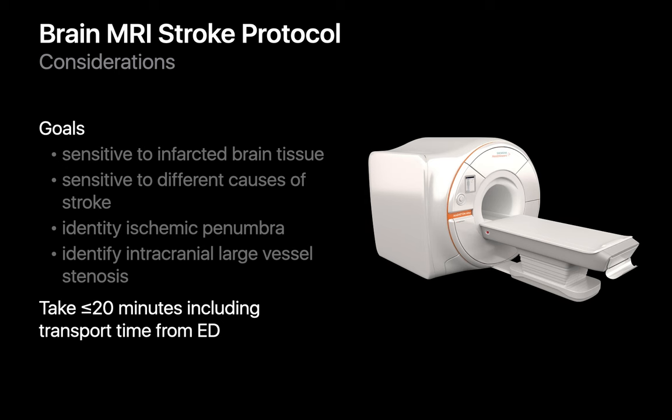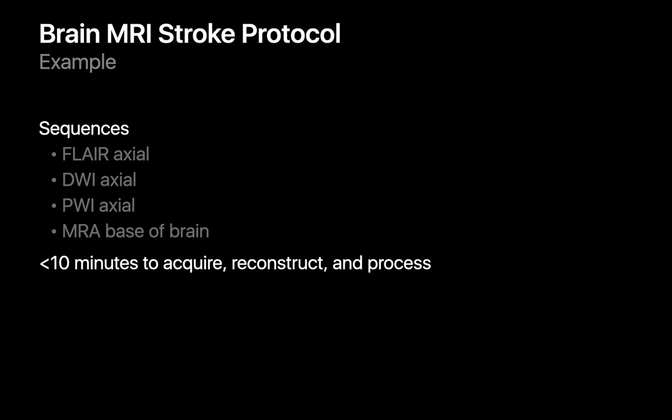Most brain MRI stroke protocols are tailored to answer the most relevant clinical questions in as little time as possible: Is there an infarct? What kind of infarct is it? Is there a penumbra of brain tissue that can still be salvaged with intervention? And is there an intracranial large vessel stenosis? The goal is to answer these questions within 20 minutes of the patient being wheeled out of the ED. The most abbreviated protocols may consist of just axial FLAIR, diffusion-weighted, and perfusion-weighted images, and an MRA of the base of the brain.